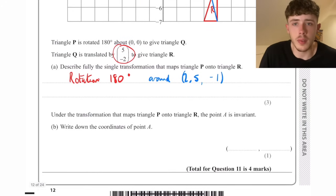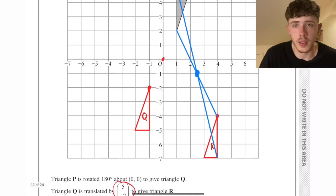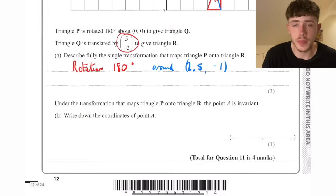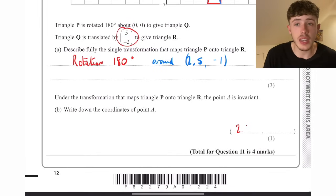Under the transformation, point A is invariant. The point that is invariant, invariant means it doesn't change, so the point that doesn't change is actually that turning point of 2.5 minus 1.